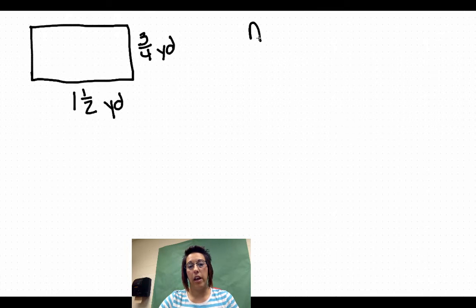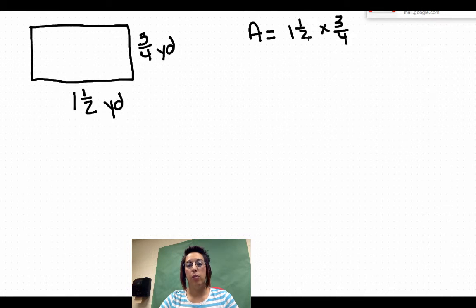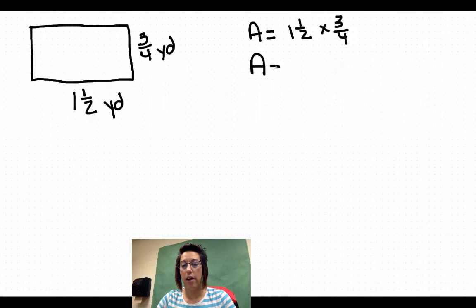So area equals one and one-half times three-fourths. Okay, remember one and one-half. We have to go ahead and make that into an improper fraction to multiply. So two times one is two plus one is three. Three-halves times three-fourths.